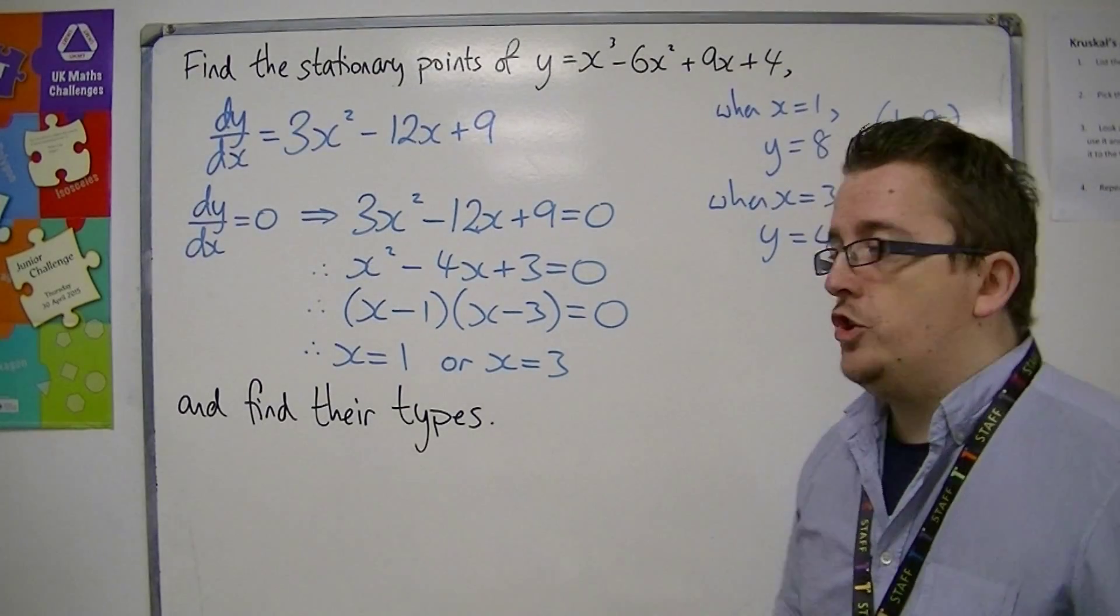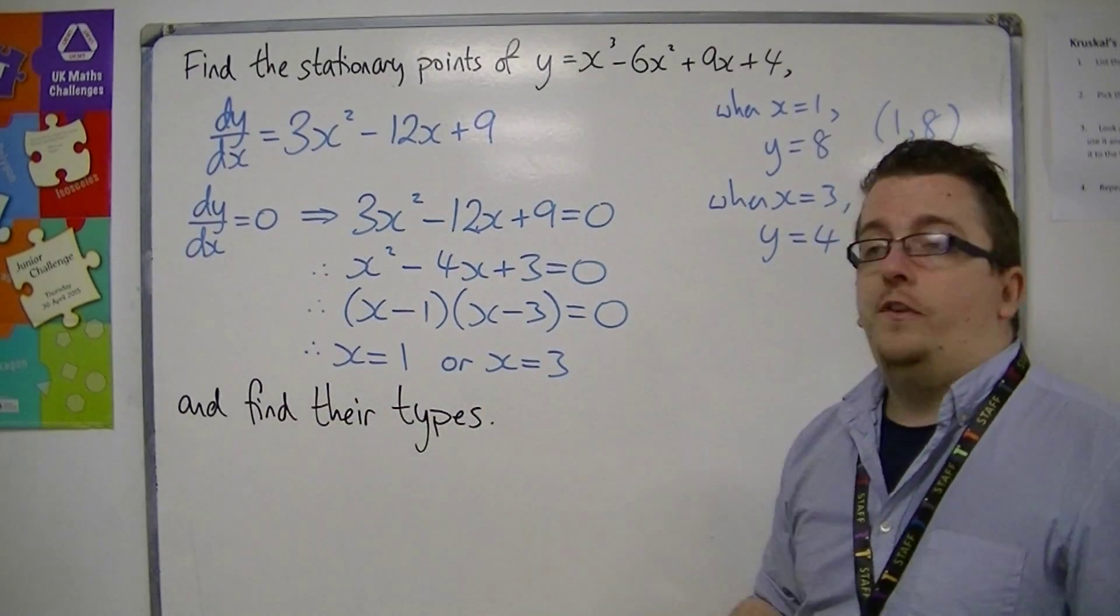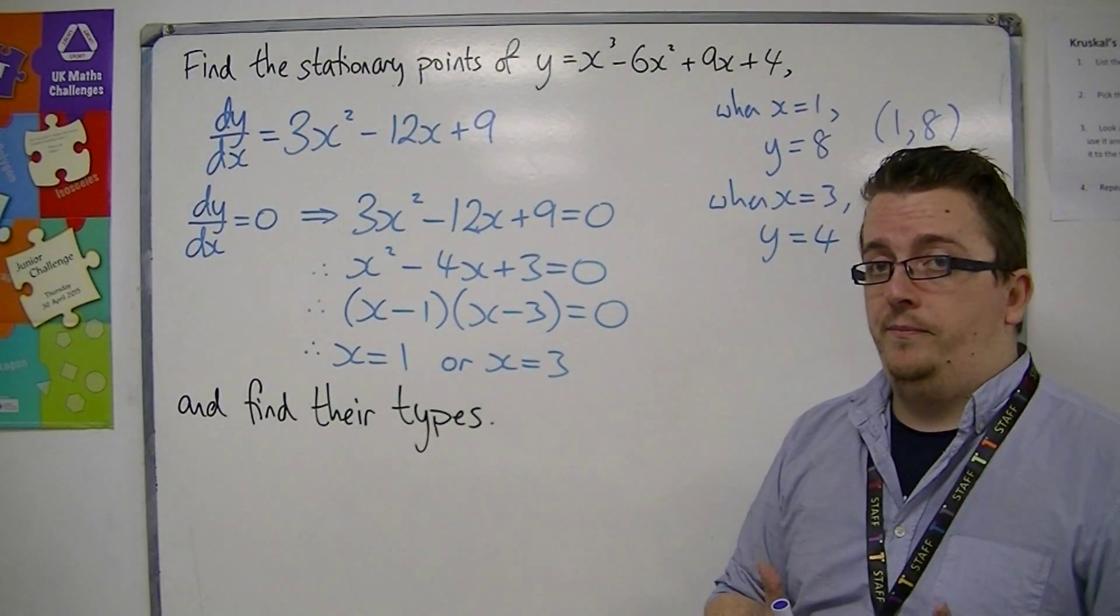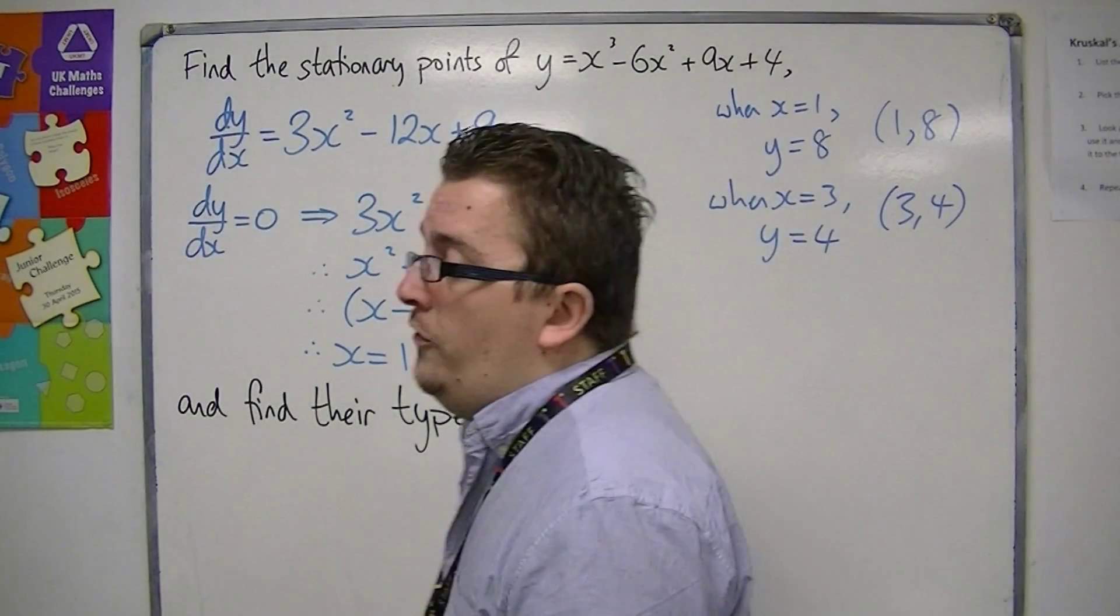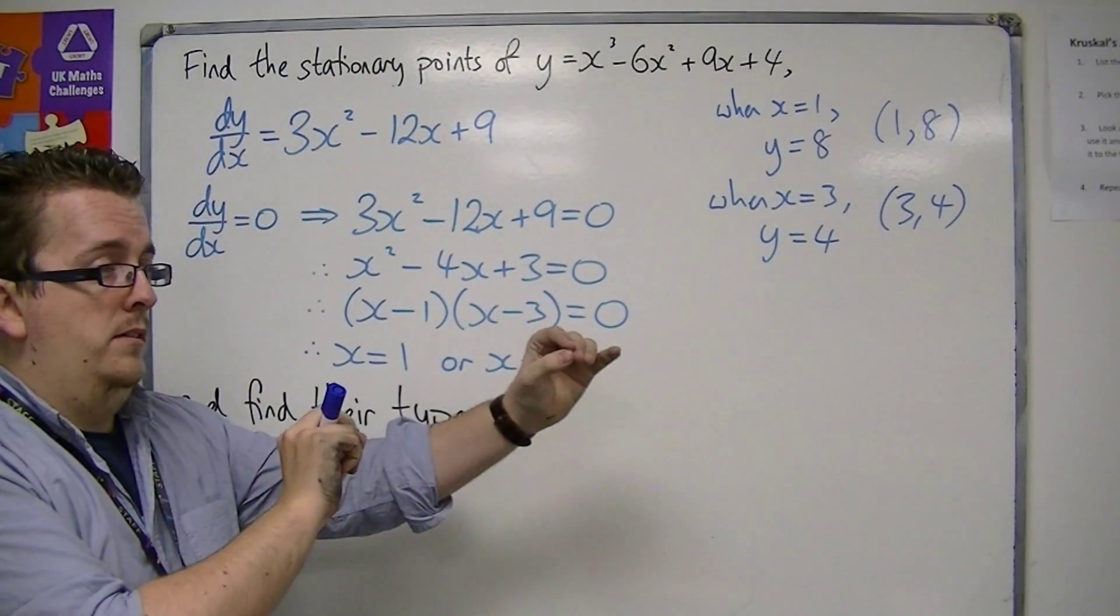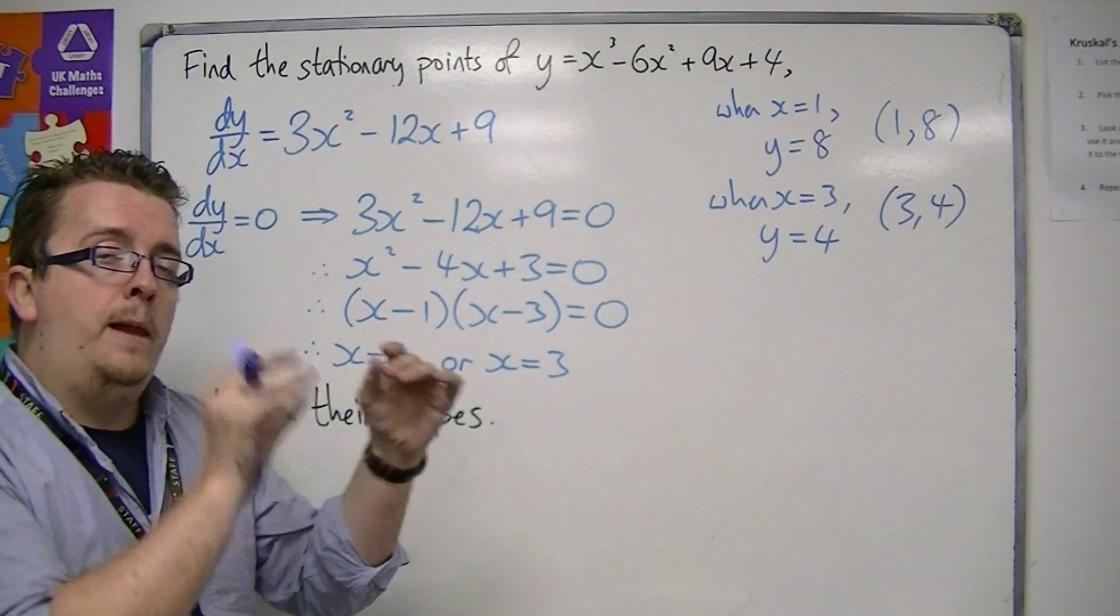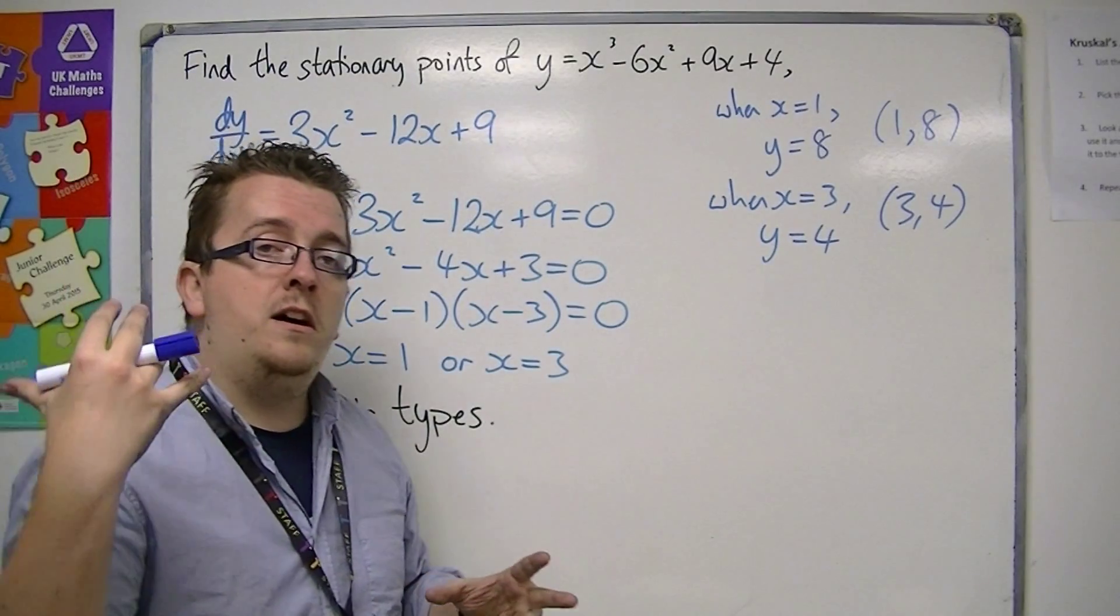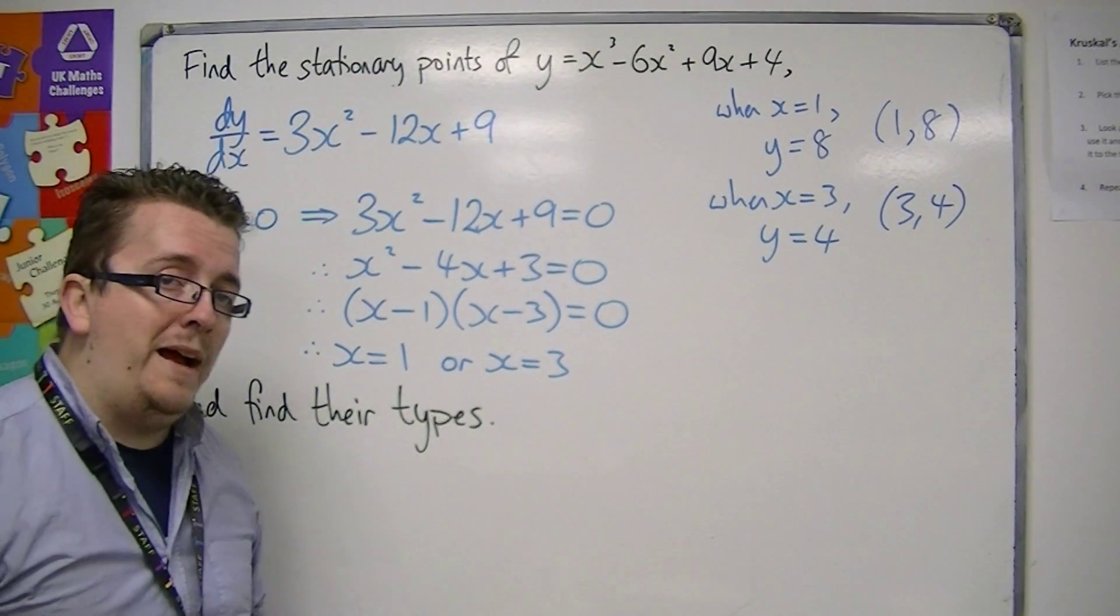And now we've got the added question of identifying their types. So what that means is that we found where the stationary points are, but we don't know yet whether they are local minimums or local maximums.